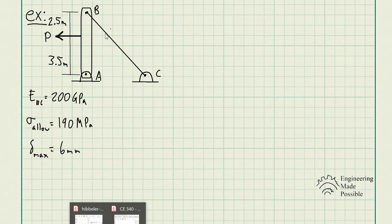For this steel cable, we have the modulus of elasticity of 200 gigapascals. Now we have two criteria that we must meet to solve for this maximum P that we could apply to this structure. The maximum allowable stress must not exceed 190 megapascals. In addition to that, the maximum deformation or elongation of that cable BC must not exceed six millimeters.